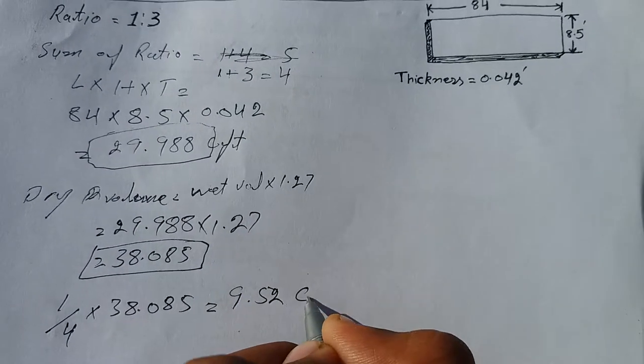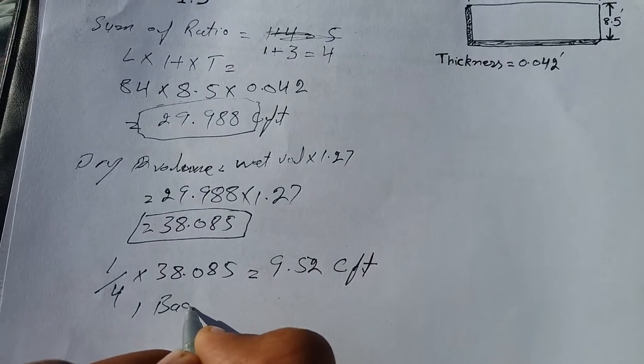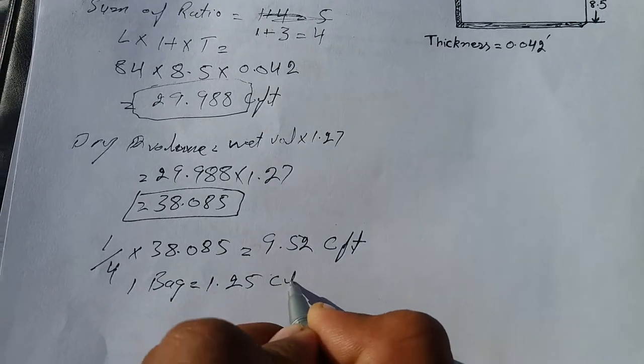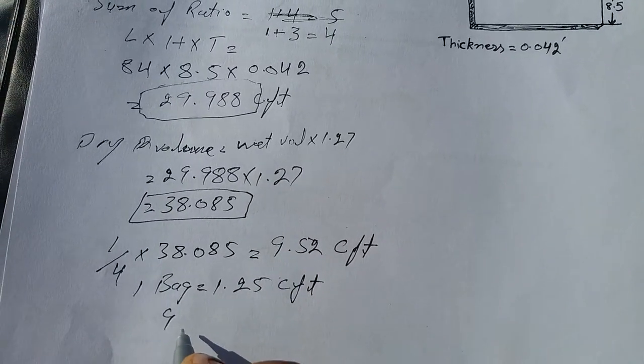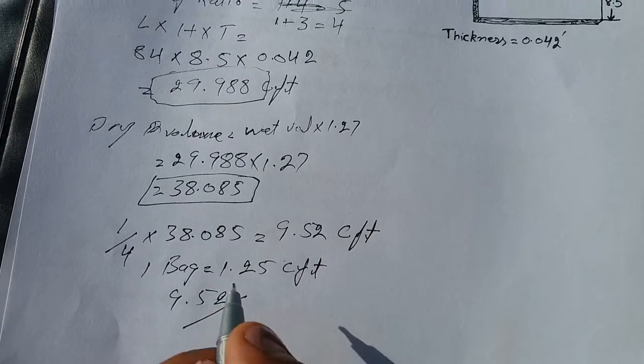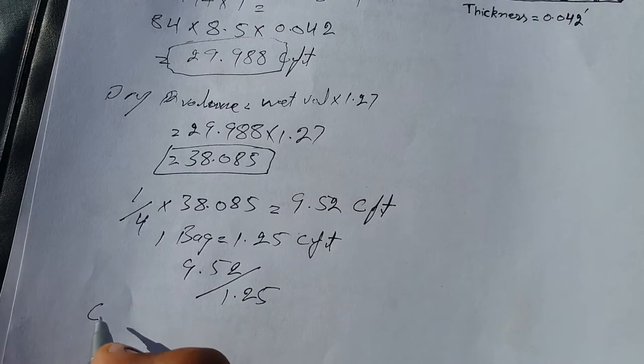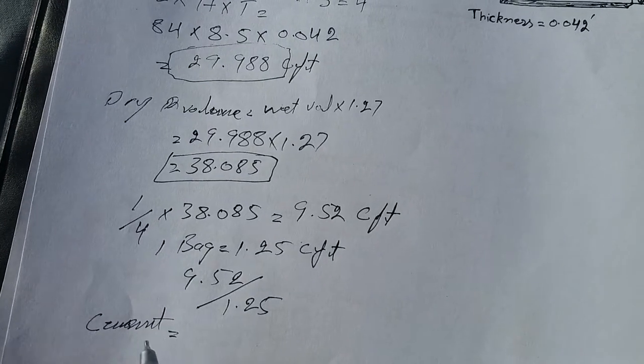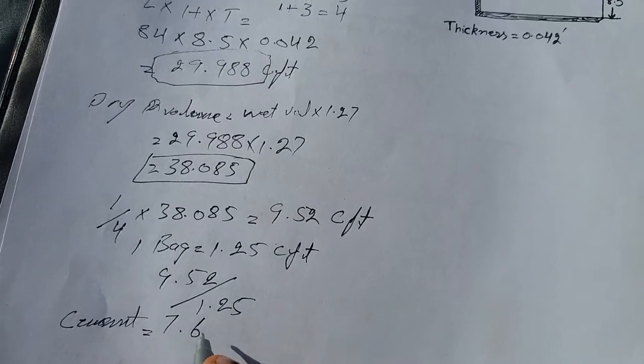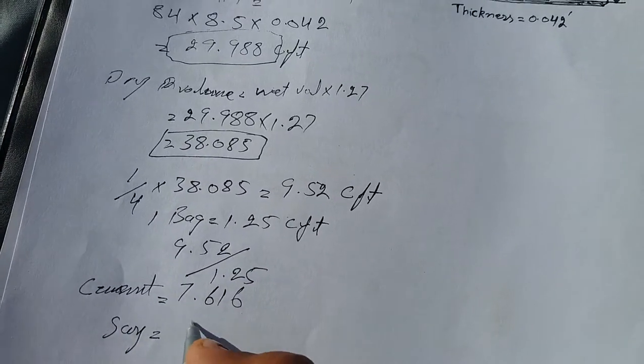One bag is equal to 1.25 cubic feet, so we directly divide by 1.25 cubic feet. So cement equals 7.616 bags, say 8 bags.